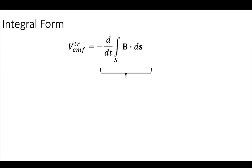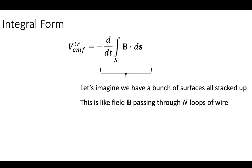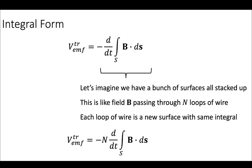Looking at this a bit more, we're going to imagine that we have a bunch of surfaces all stacked up, so a bunch of surfaces that are layered together. This would be like a magnetic field that's passing through some loops of wire. So we will say that's N number of loops of wire. Each loop of wire is a new surface, but it has the same integral. So if we did this integral for N different loops, we would add an N there.